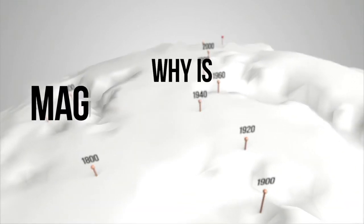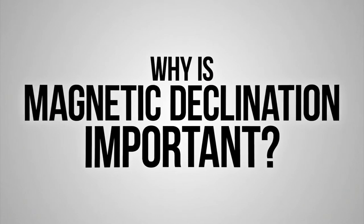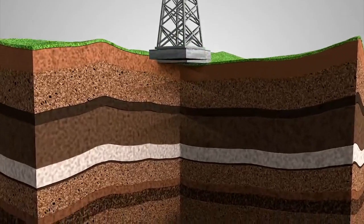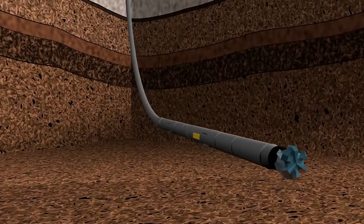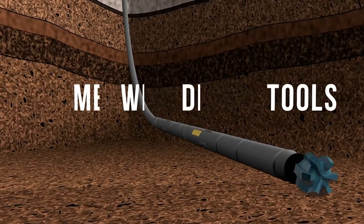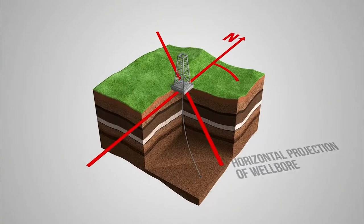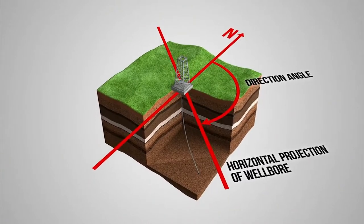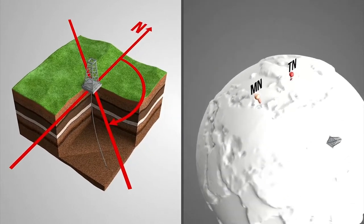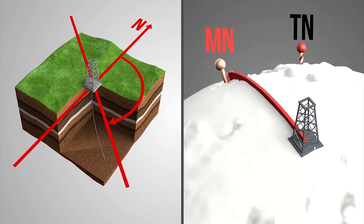So why is magnetic declination important? Magnetic declination is a crucial aspect of survey management when considering measurement while drilling tools or MWD tools. This is because these tools rely on magnetic sensors for the measurement of azimuth. And therefore, fundamentally, the tool uses magnetic north as its reference for azimuth.